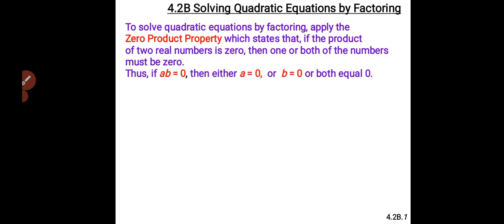We said that if the product of two real numbers is zero, then one or both of the numbers must be zero. So, if AB is equal to zero, then this means that A is equal to zero, or B is equal to zero, or both are equal to zero.